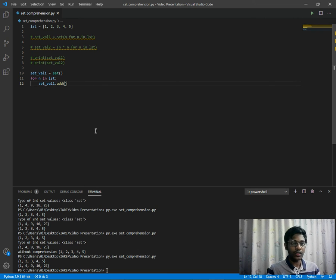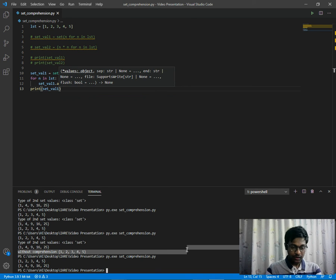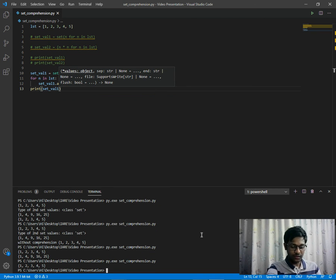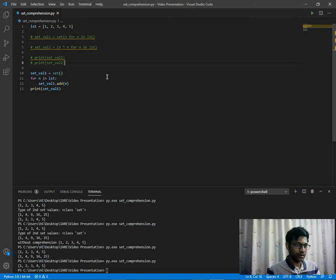Finally we'll print the set and run the code. As you can see, this whole lines of code has been replaced by a single line. This is how sets work and set comprehensions work. That's all for now and thanks for watching, bye.